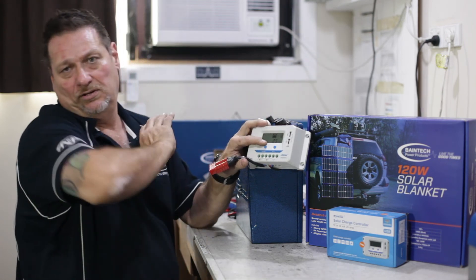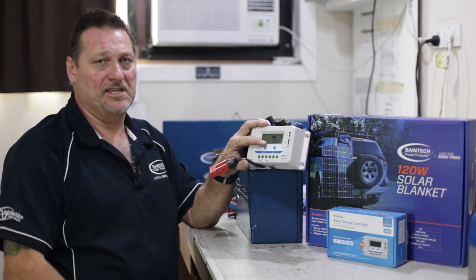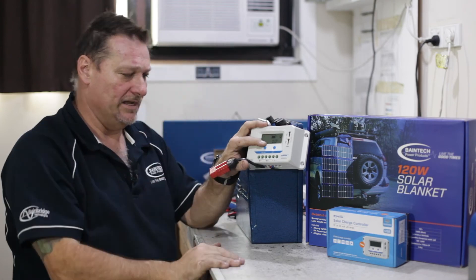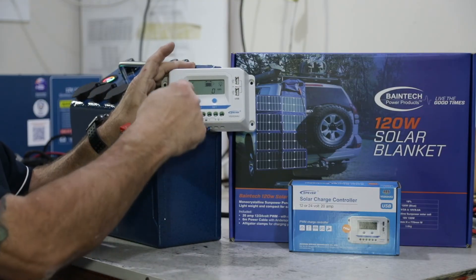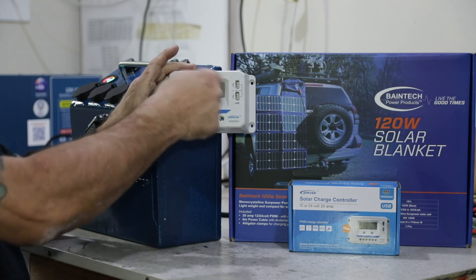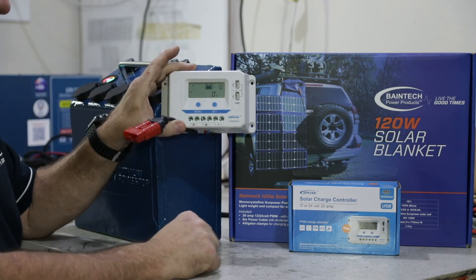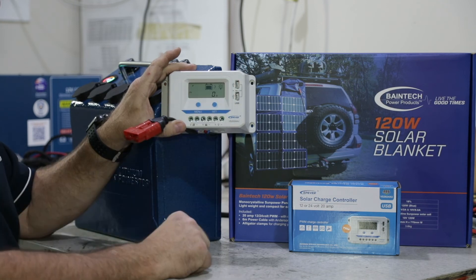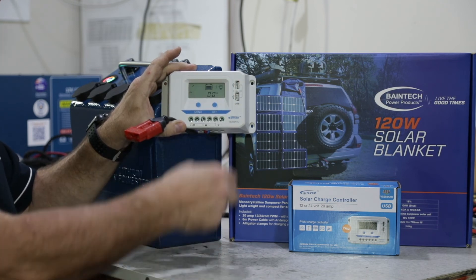So that you can have all this near your campsite or in the back of your car which could be under the shade and then you run the solar panel and the blanket out in the sun. So you keep that out in the sun and keep this in the shade. Then it will come up and show you the actual wattage and the amps that the solar is producing.